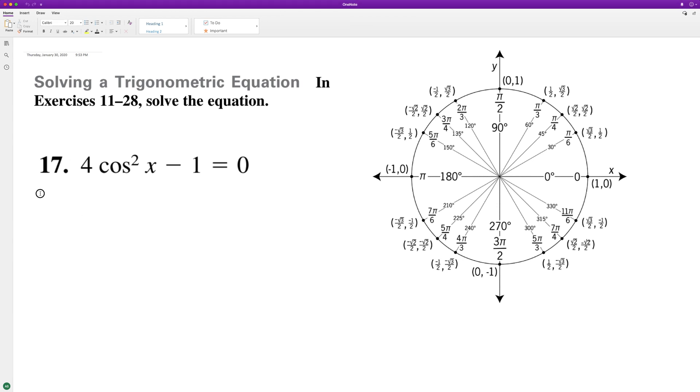So what we'll do here is factor this out. We'll have two cosine X minus one, and then two cosine X plus one.